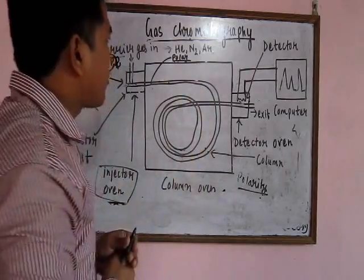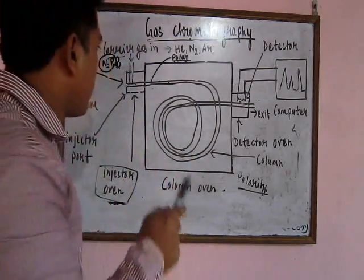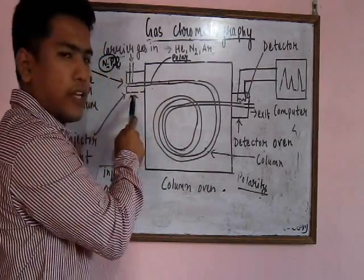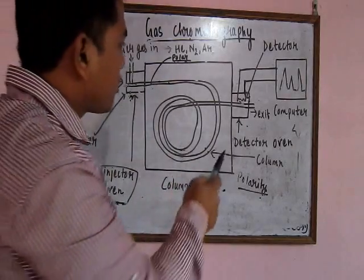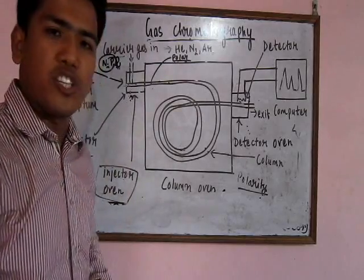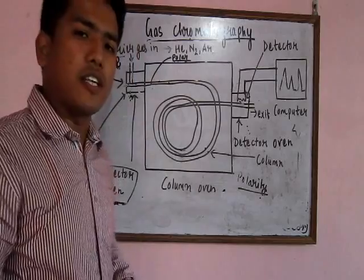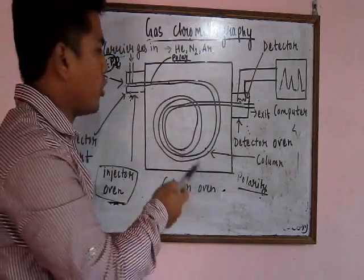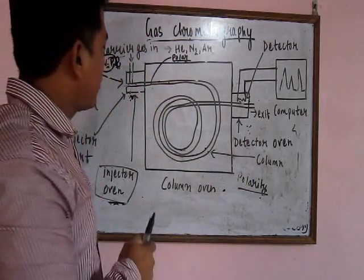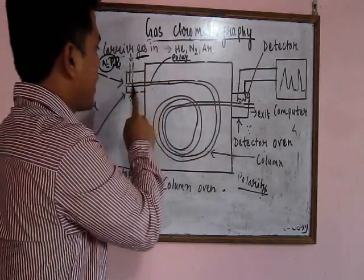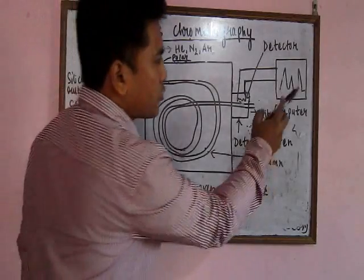Retention time in gas chromatography is the time taken by the sample from the injection point to reach the detector. The dead time is the time when the time taken by the solute to travel from the sample injection point to the detector is the same as the time taken by the carrier gas to travel from the injection point to the detector.